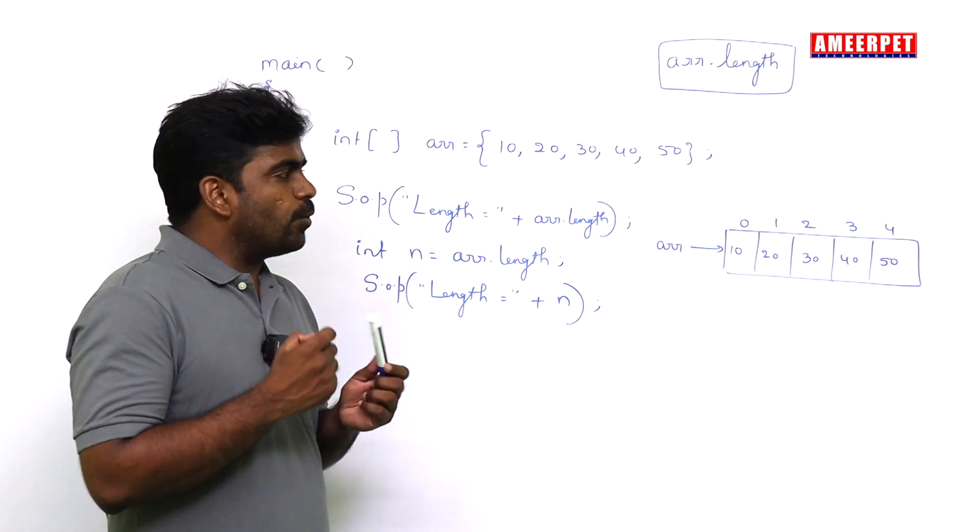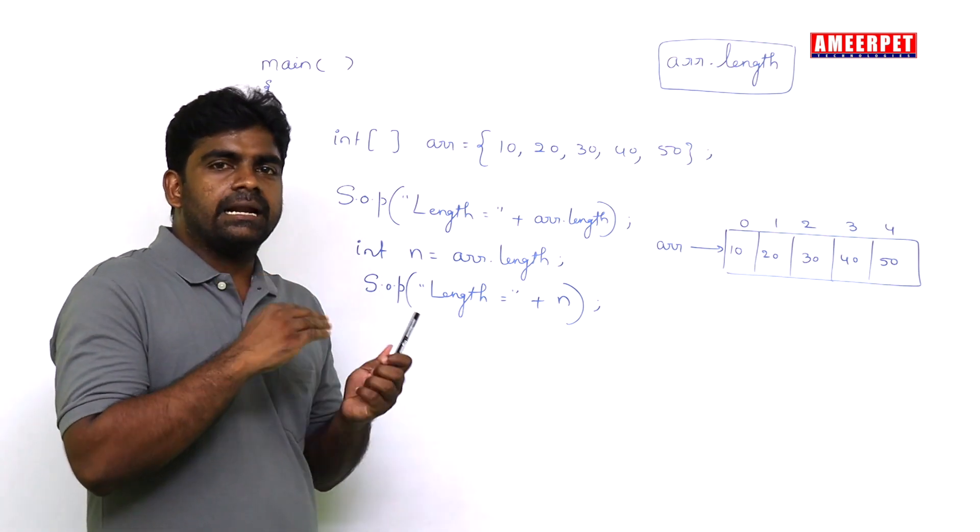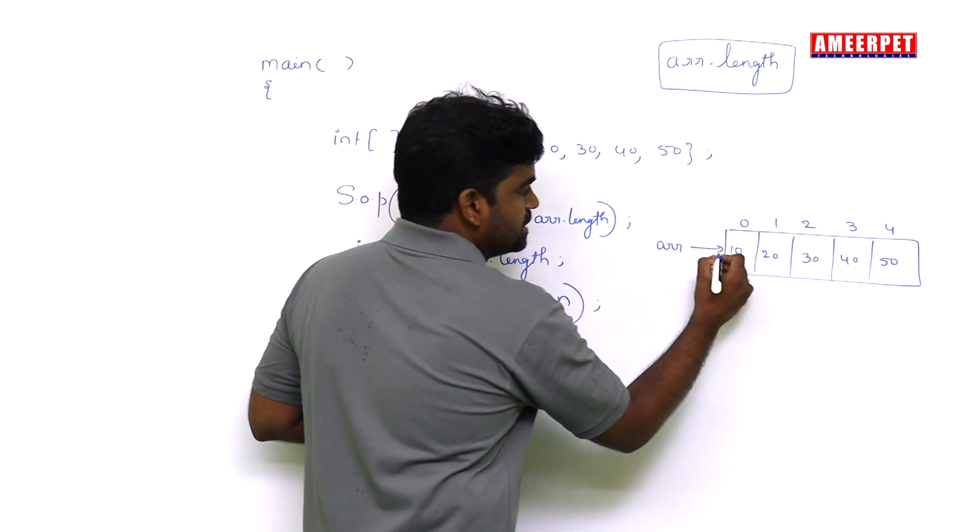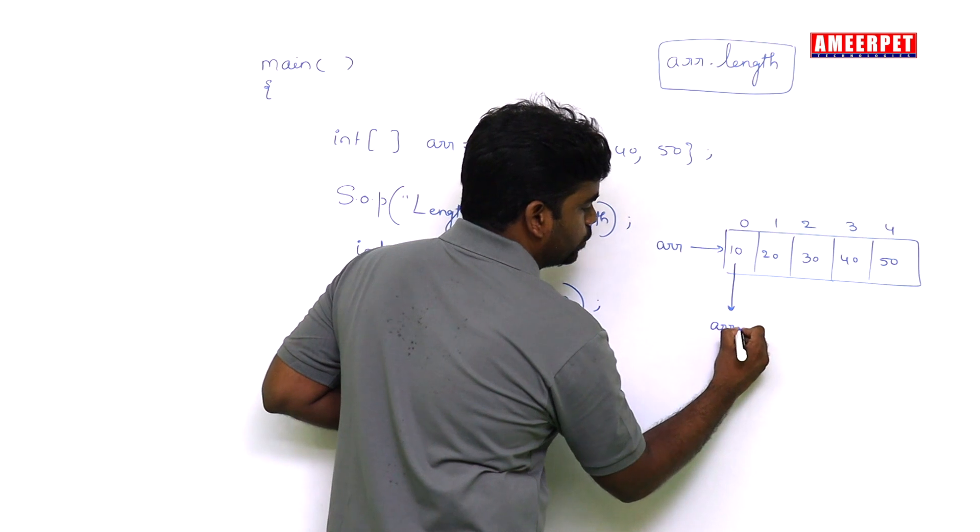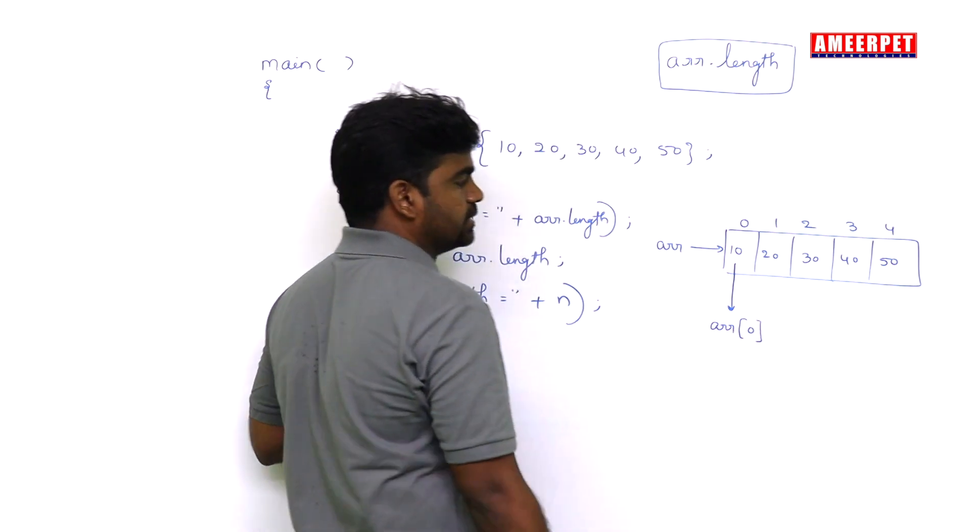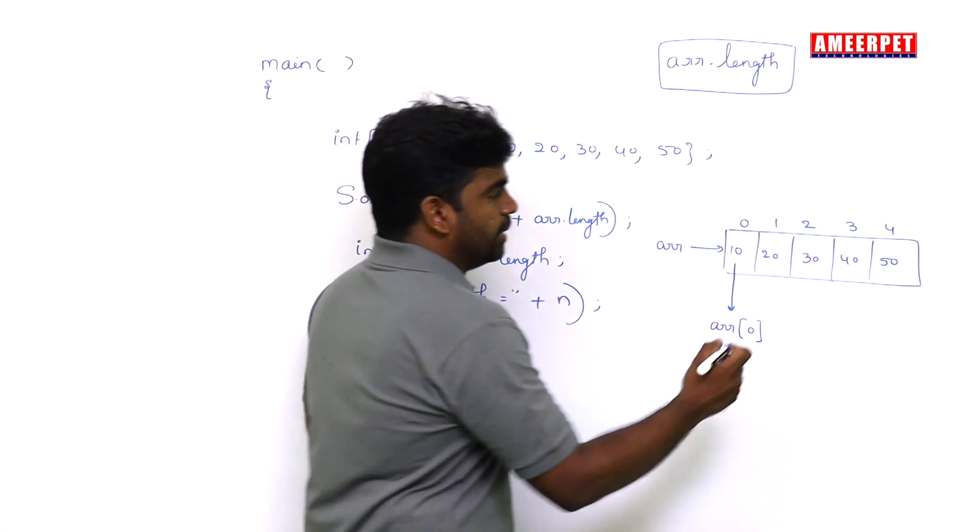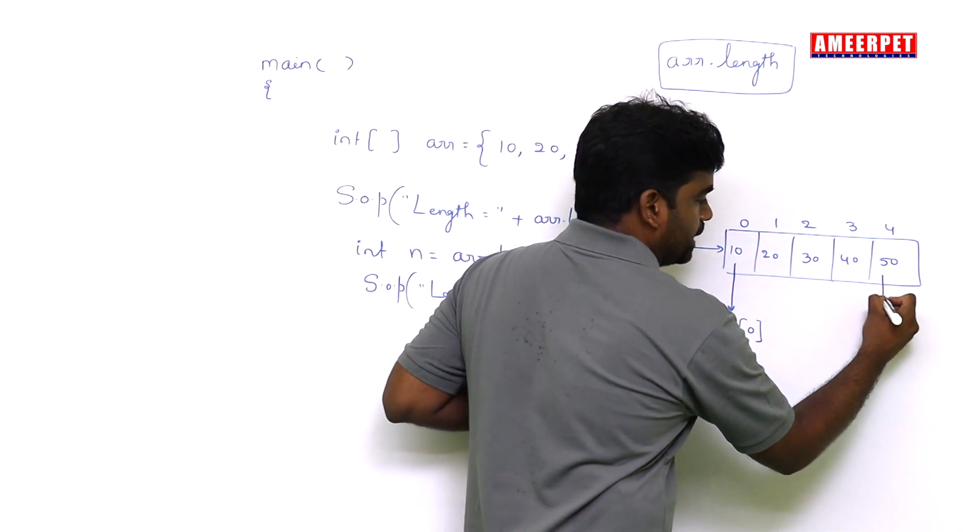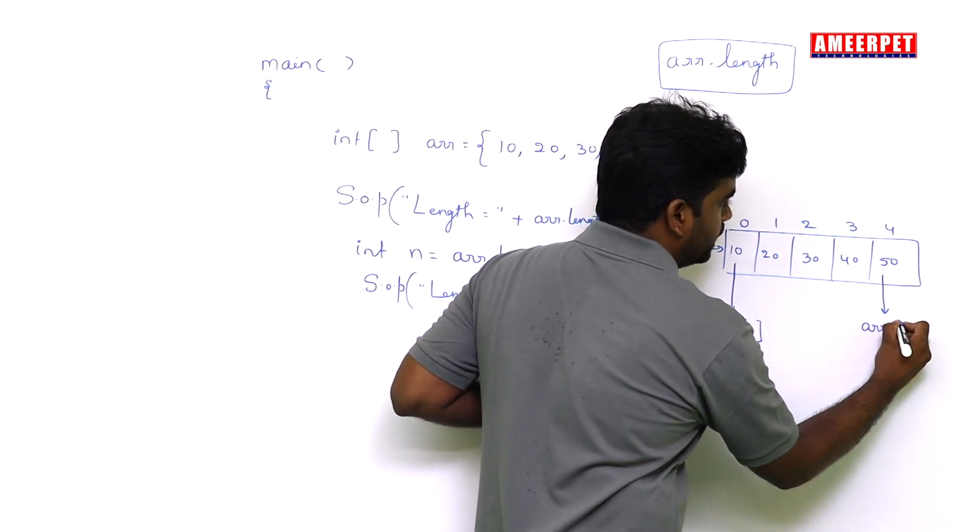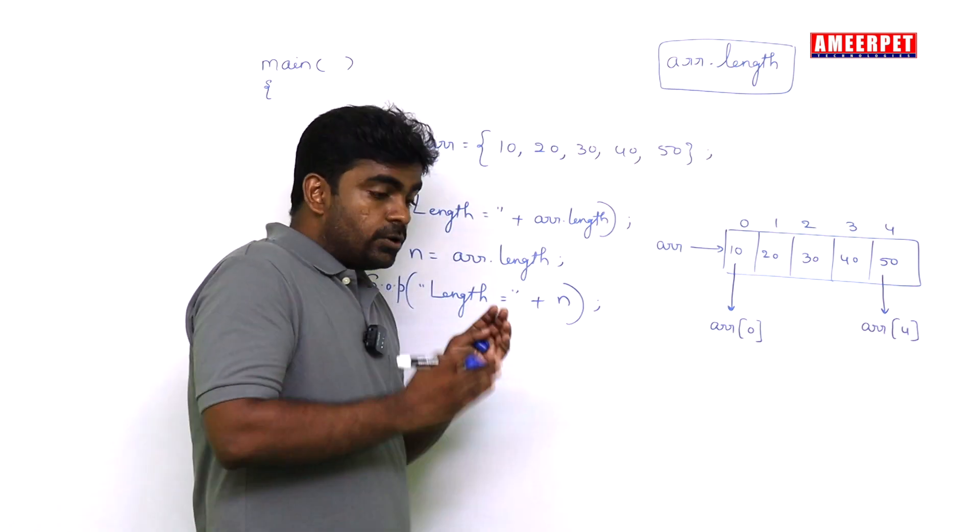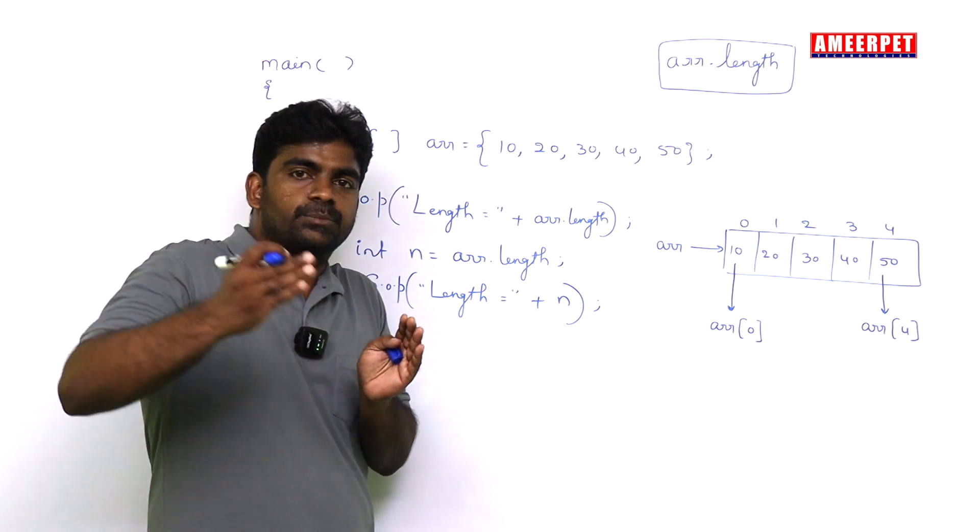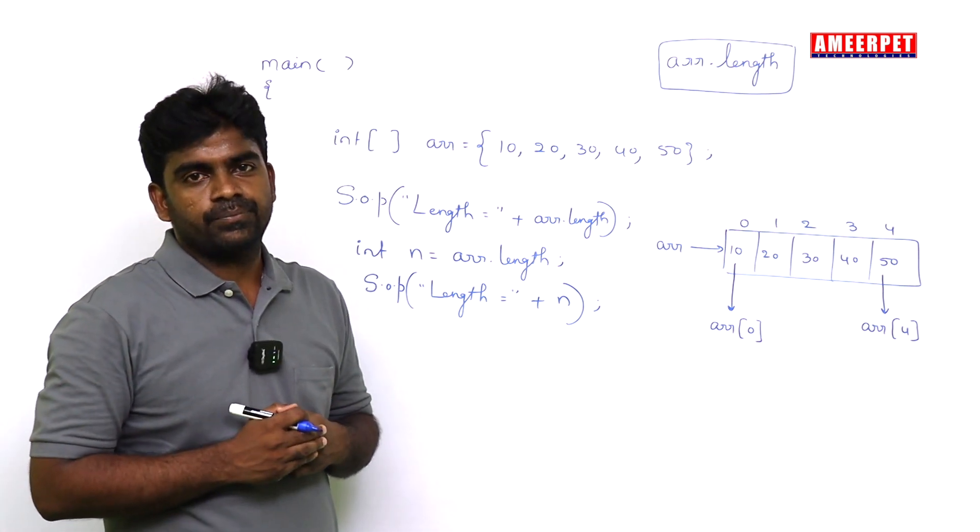Next, I want to display the first element and last element. The first element is fixed - always it is in the 0th location. But that last one is not guaranteed. Please don't do it directly like arr of 4, because the size may increase or decrease.